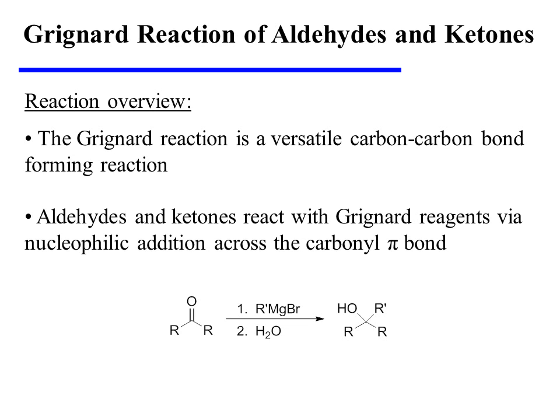The Grignard reaction is a versatile carbon-carbon bond forming reaction. Aldehydes and ketones react with Grignard reagents via nucleophilic addition across the carbonyl pi bond, and in the process, a new alkyl group is added to what was once the carbonyl carbon.